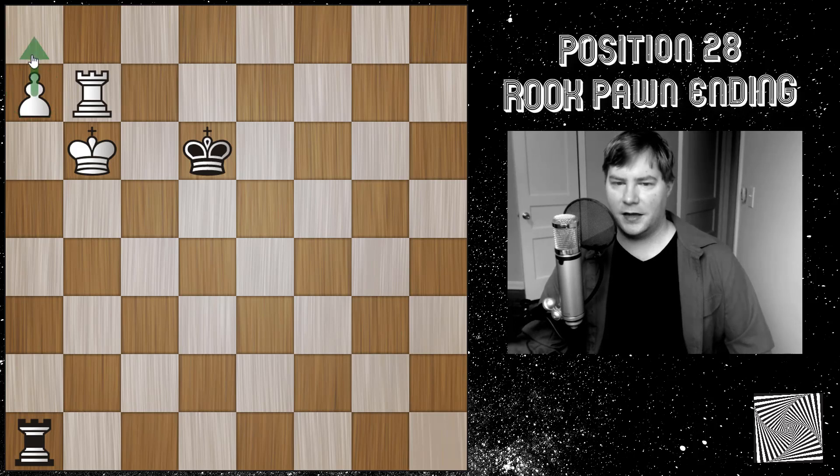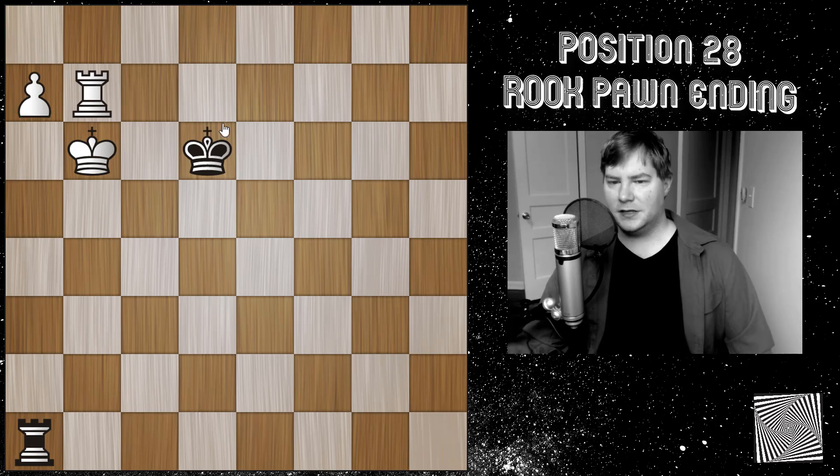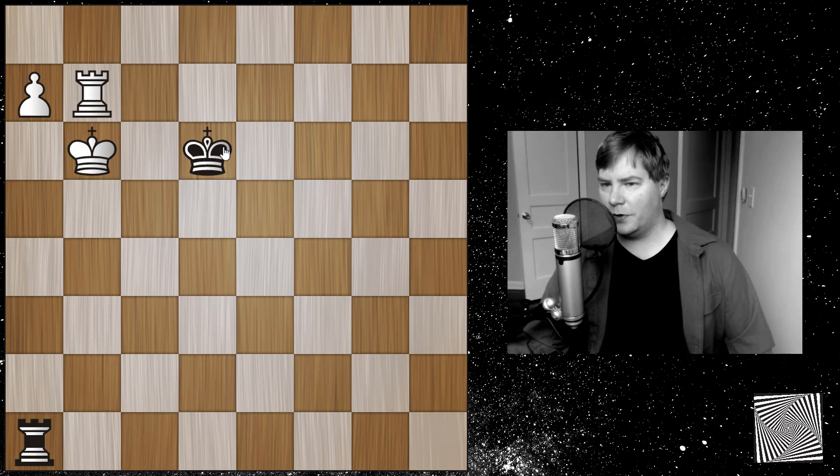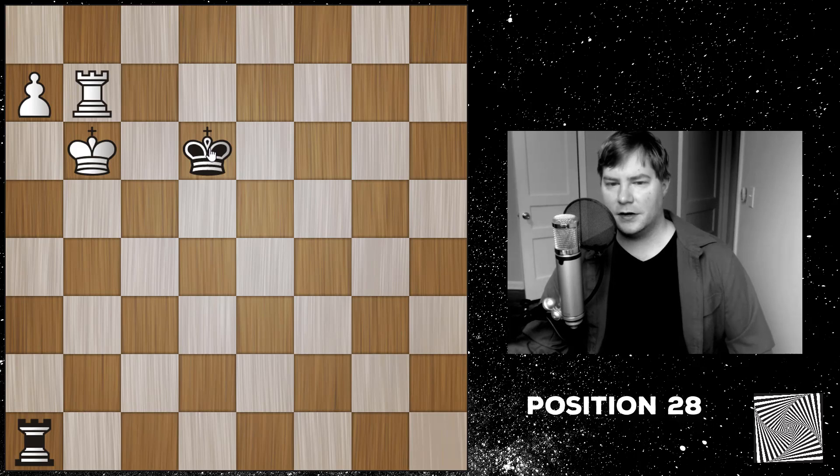where white is trying again to queen a rook pawn. But this time, the draw to win scenario is really razor's edge, because black's king is closer, and white is rather cramped with his rook being on this square. So if you want to pause the video, I'd encourage you to do that now. And let's just get into it.